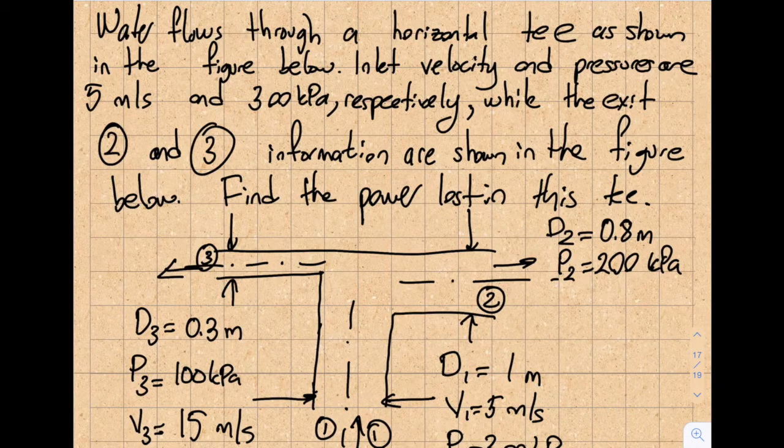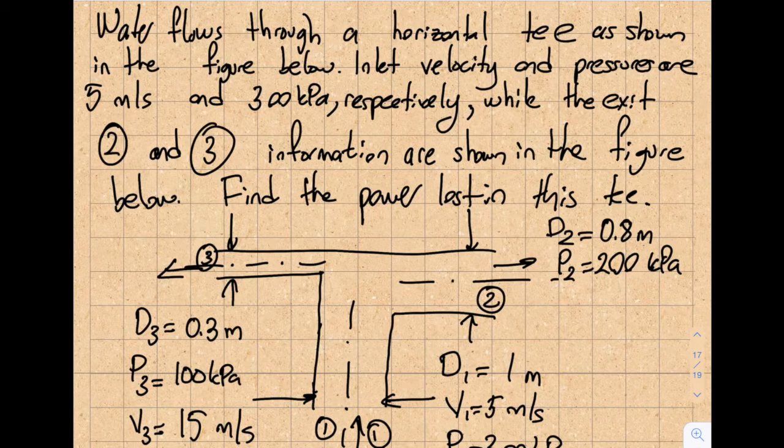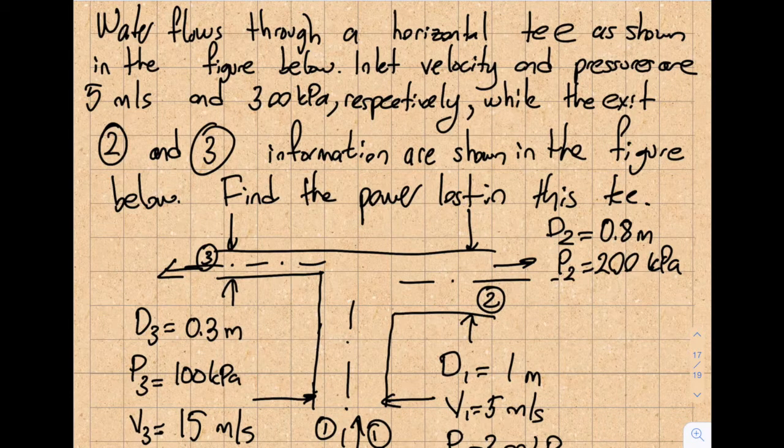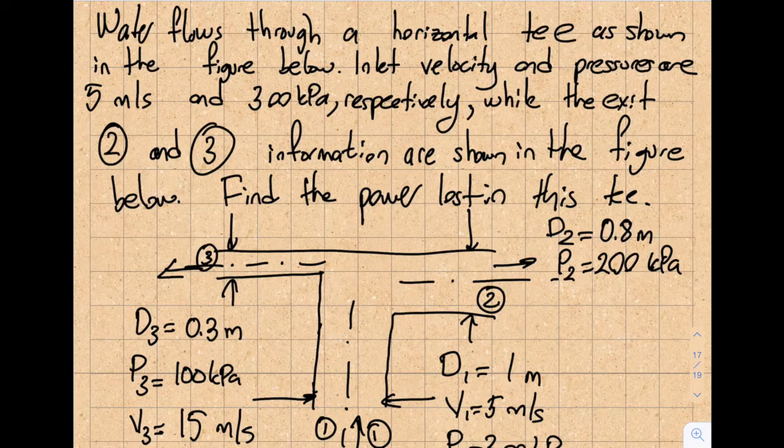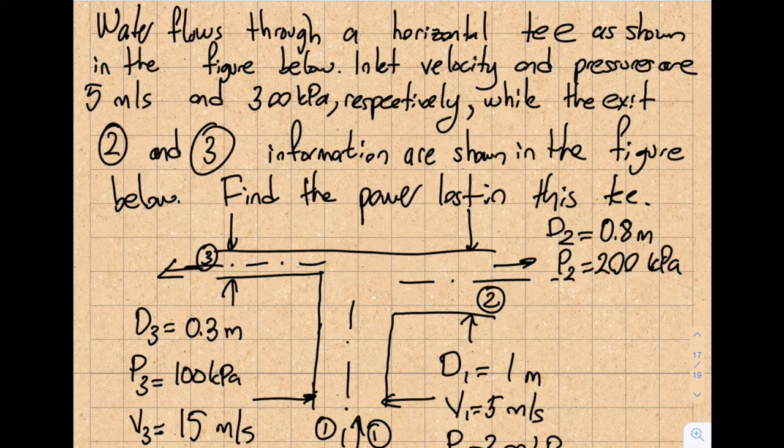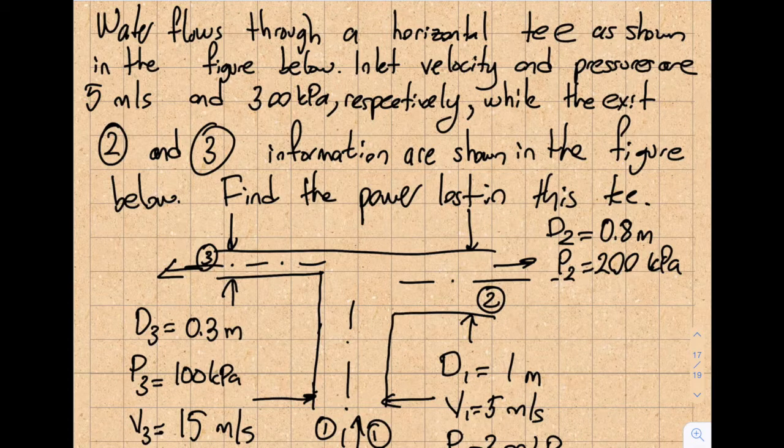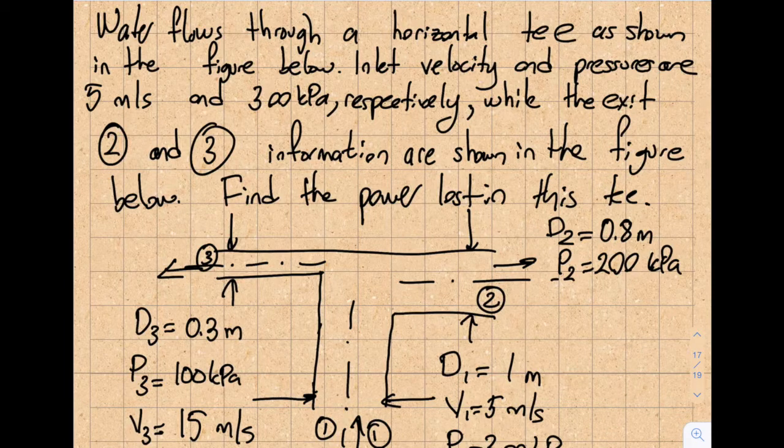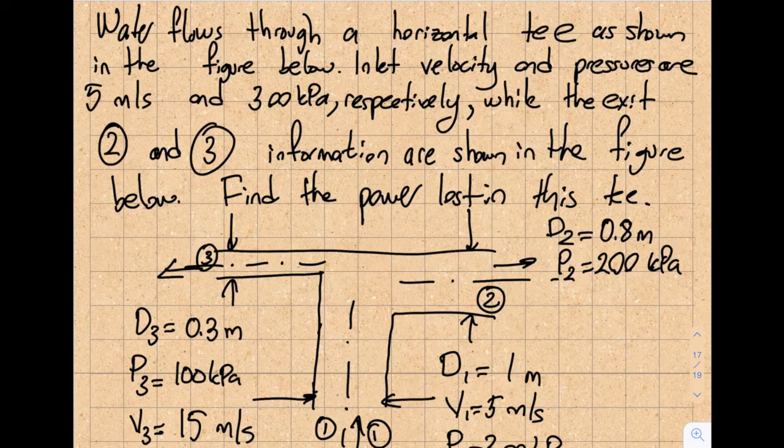Okay, today we are going to talk about how to find the power loss in a fluidic system. The question reads: water flows through a horizontal T as shown in the figure below. Inlet velocity and pressures are 5 meters per second and 300 kilopascals respectively, while the exit 2 and 3 information are shown in the figure below.